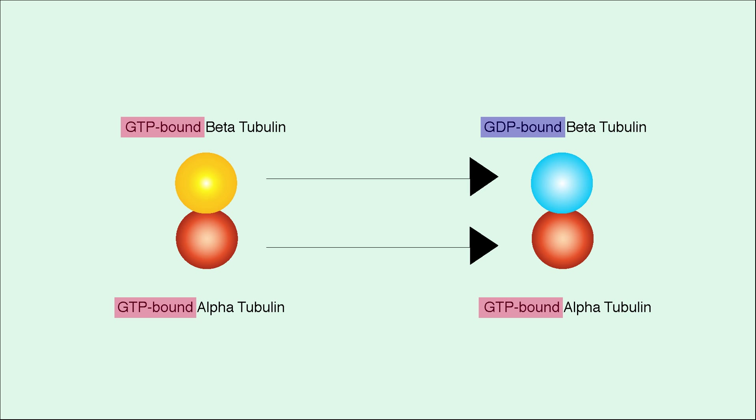Both the alpha and beta tubulin components of microtubules can bind GTP. However, alpha tubulin is always GTP-bound, while beta tubulin can hydrolyze GTP to GDP.